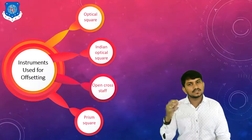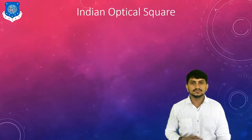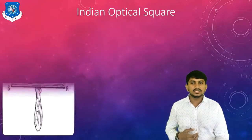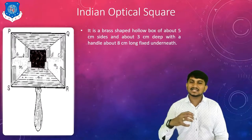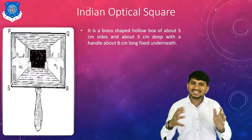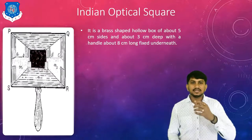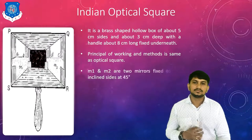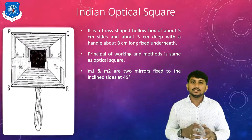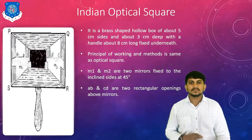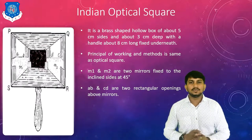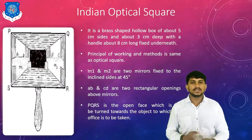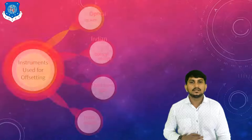The next instrument used for offsetting is the Indian optical square. It is a brass-shaped hollow box of about 5 cm sides and about 3 cm deep, with a handle about 8 cm long fixed underneath. The principle of working and method of operating is similar to the optical square. Here M1 and M2 are two mirrors fixed to the inclined sides at 45 degrees. AB and CD are two rectangular openings above the mirrors, and PQRS is the open face turned towards the object.